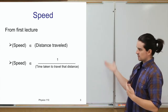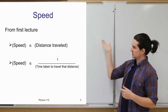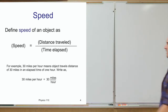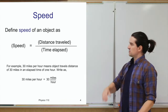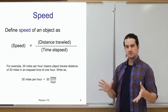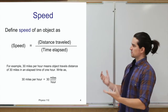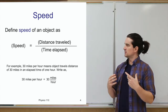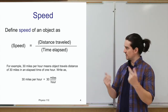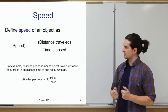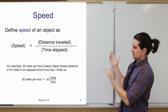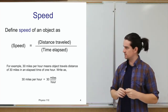So greater time of travel means slower speed — an inversely proportional relationship. We define speed as exactly these two things: speed is the distance an object travels divided by the time it took to travel that distance.